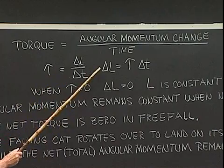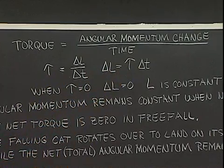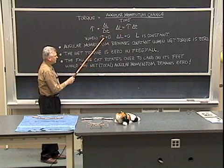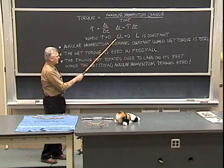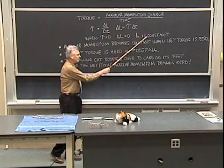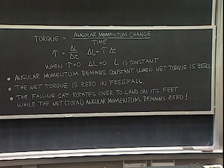Written in this form, the angular momentum change is equal to the torque multiplied by the time interval. So when the torque is equal to zero, the angular momentum change is also equal to zero, which means that the angular momentum remains constant. So when the torque is zero, the angular momentum does not change.